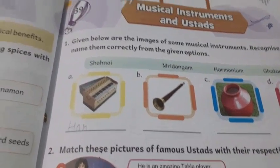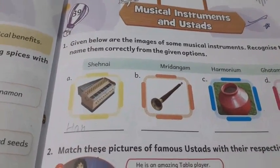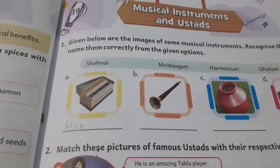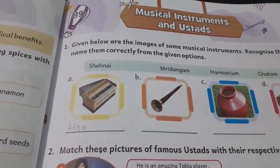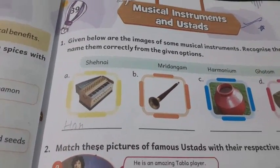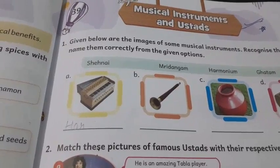Ustad — jho usko play karta hai, usko ustad bolte hai. Jho usmein mahir hota hai, usko ustad bolte hai. The one who is an expert in playing it is called an ustad.